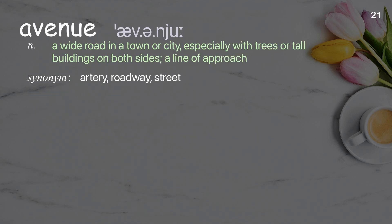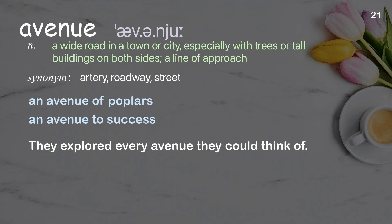Avenue: A wide road in a town or city, especially with trees or tall buildings on both sides; a line of approach. Examples: An avenue of poplars. An avenue to success. They explored every avenue they could think of.